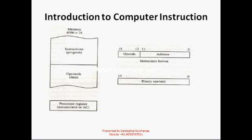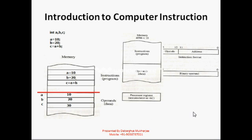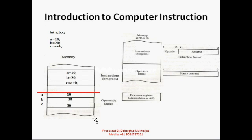This concept will be very clear once we take an example. Here you can see a very basic C, C++, or Java instruction where we have taken three variables A, B, and C and declared their data type as int. Once you declare like this in any computer program, the compiler will assign three addresses or three memory locations in the data part — three empty spaces A, B, and C in our RAM.